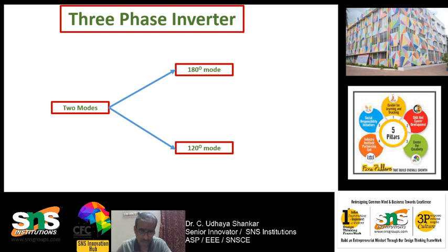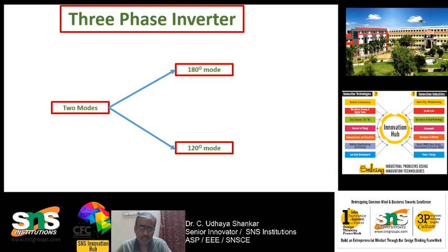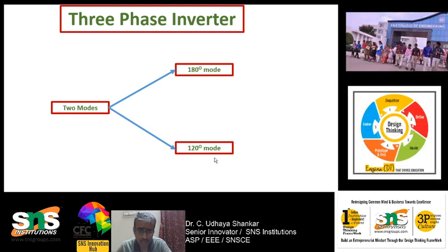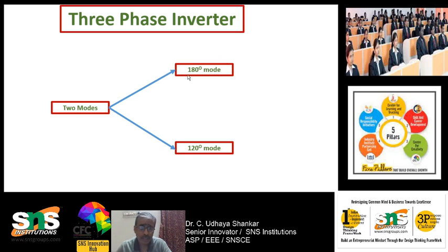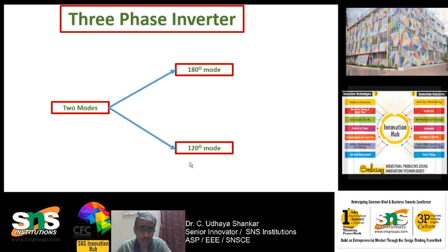In the case of a three-phase inverter there are two modes of operation: one is called the 180-degree mode of conduction and the other is called the 120-degree mode of conduction. In the 180-degree mode the rating of the transistors used is quite less, whereas in the 120-degree mode the rating of devices used is quite high compared to the 180-degree mode.